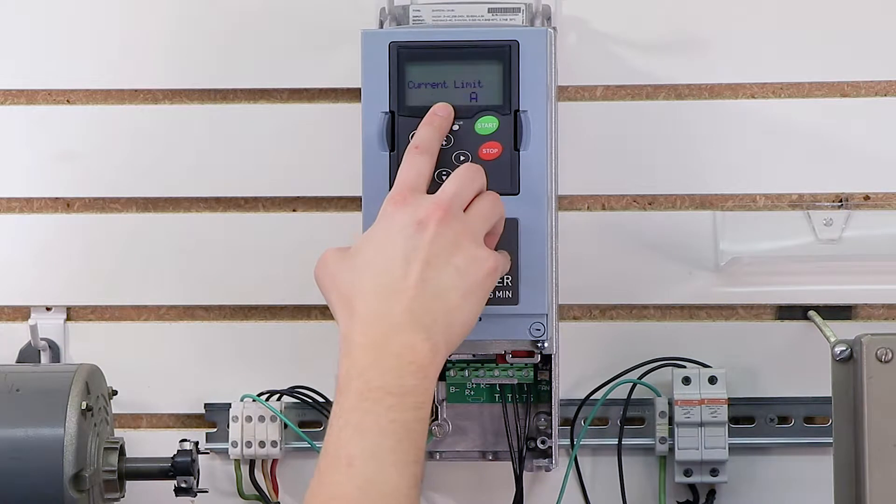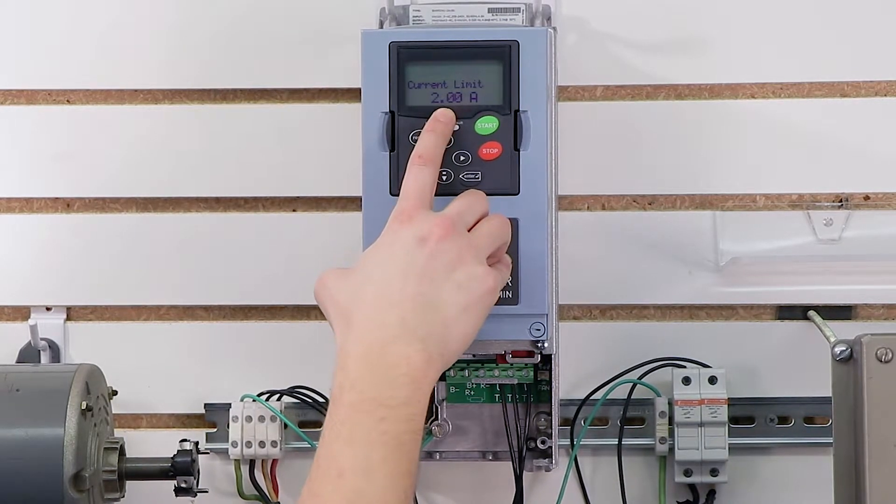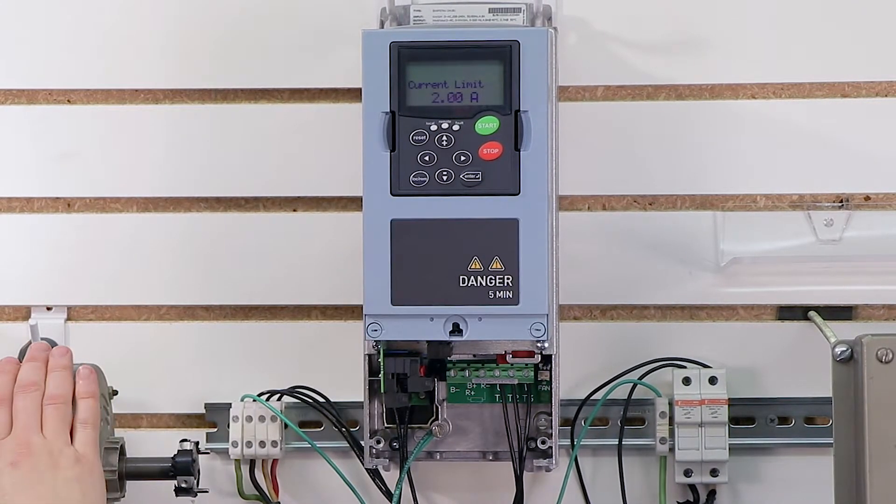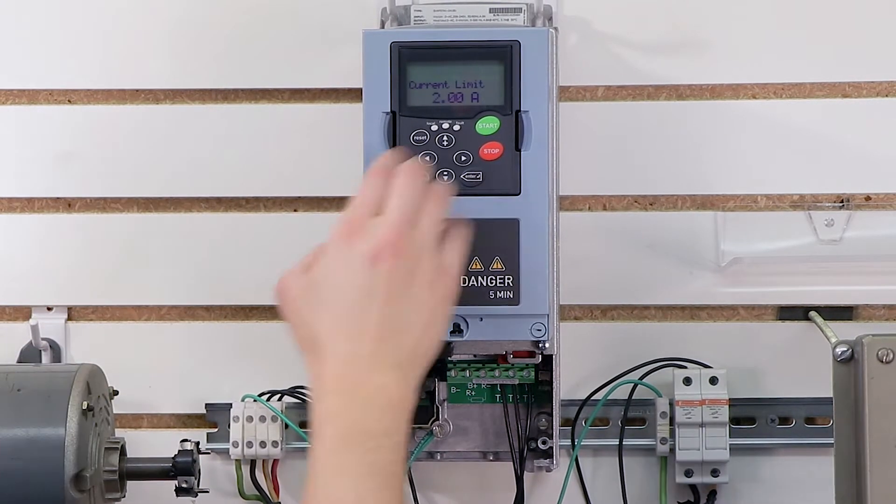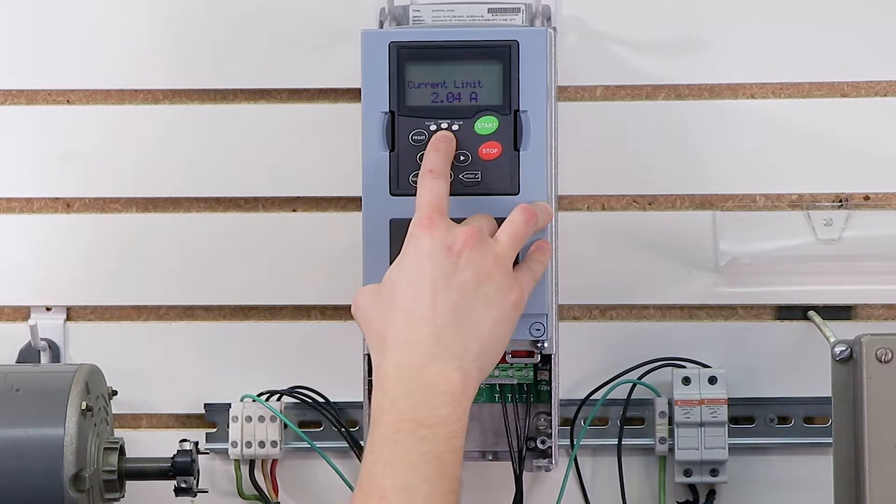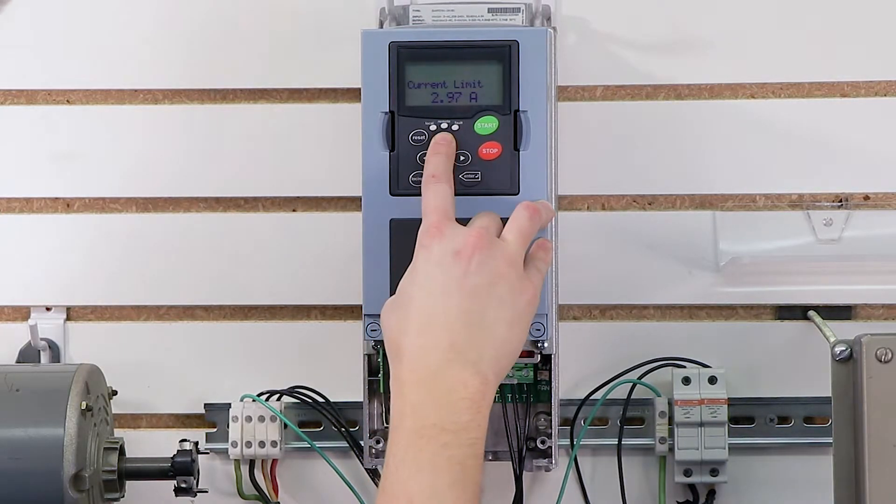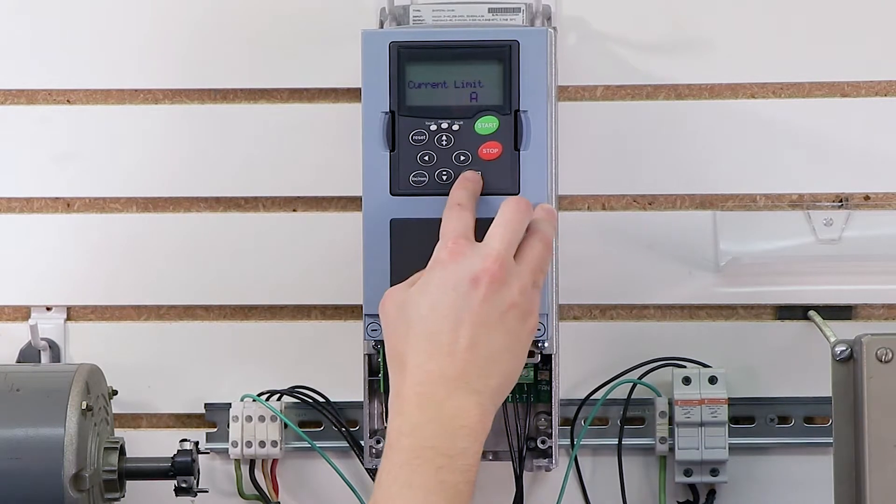Next is my current limit. Current limit is basically going to be on your motor's nameplate. And you're going to take your motor's nameplate and you're going to multiply it by one and a half. So for example, my motor is rated for two amps. But I want my current limit to be 150% of that. So that's actually going to be, if I do the math in my head, I believe it is, yes, it is three amps. So I'm going to hold the up arrow key till I get to three amps. I'm going to press enter.